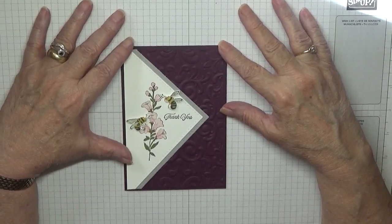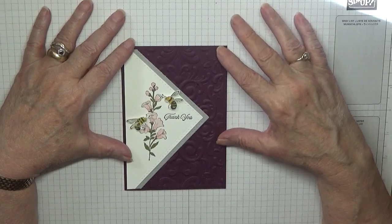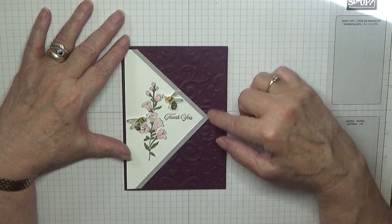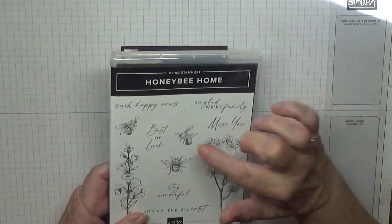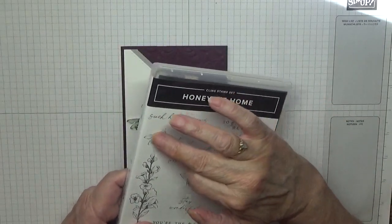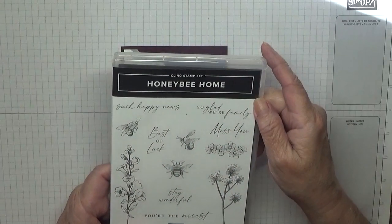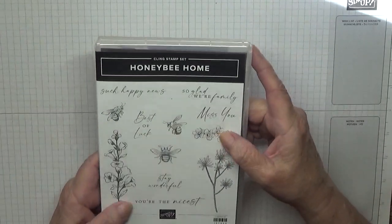Hello, Georgie Burns back again. Today I'd like to show you how I made this card using the stamp set Honeybee Home. I used the two-sided bees and this flower—that's all I used in this stamp set.